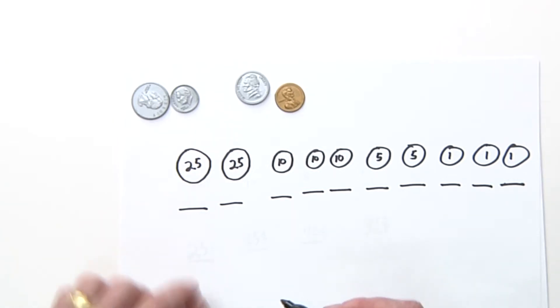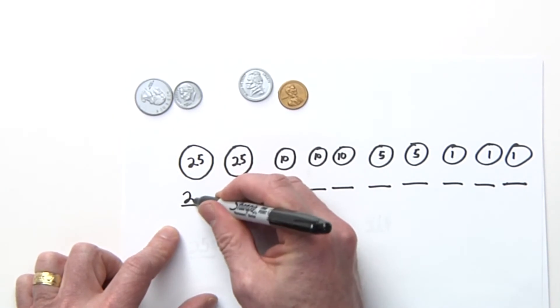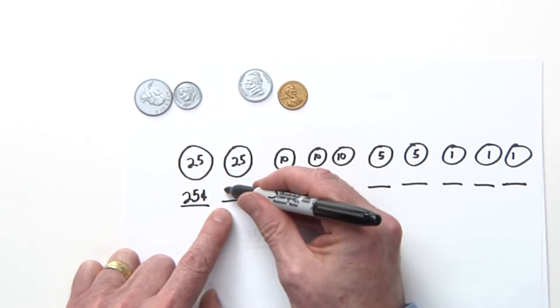Let's start. I'm going to add up all these coins: 25 cents right here, plus another 25 is 50.